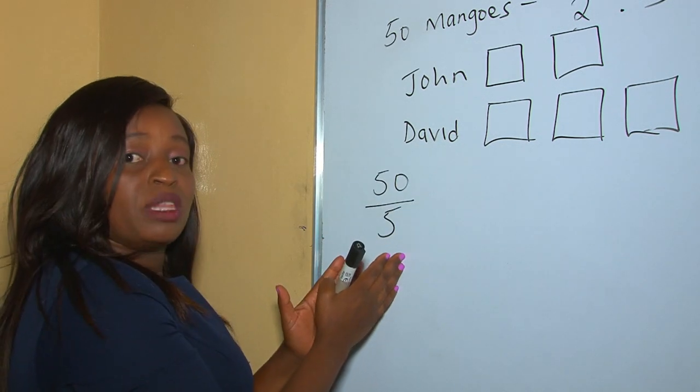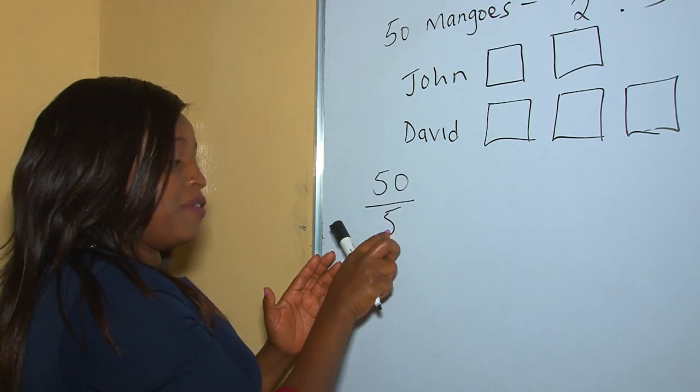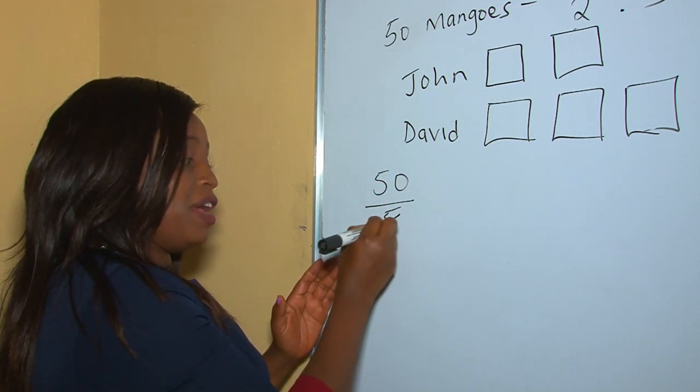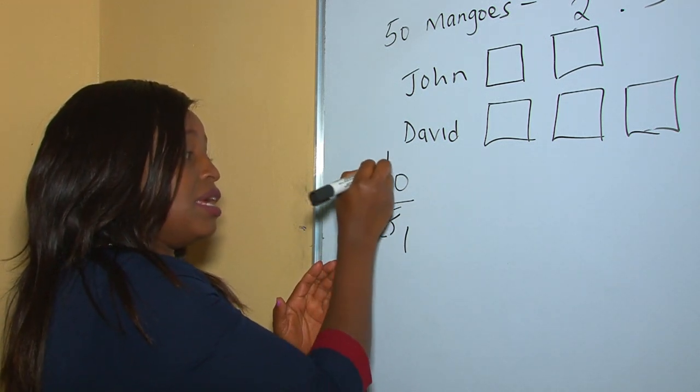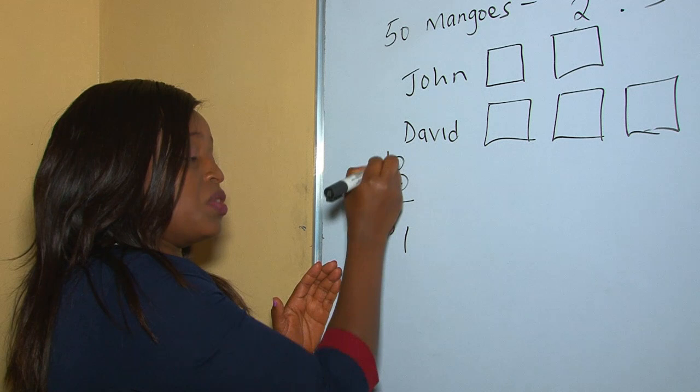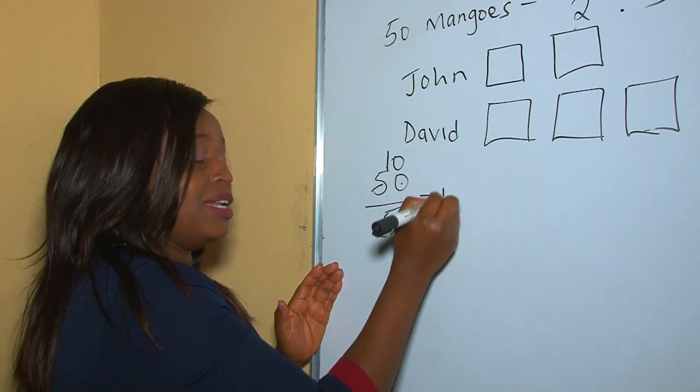50 divided by 5 is 10. So each part is worth 10 mangoes.